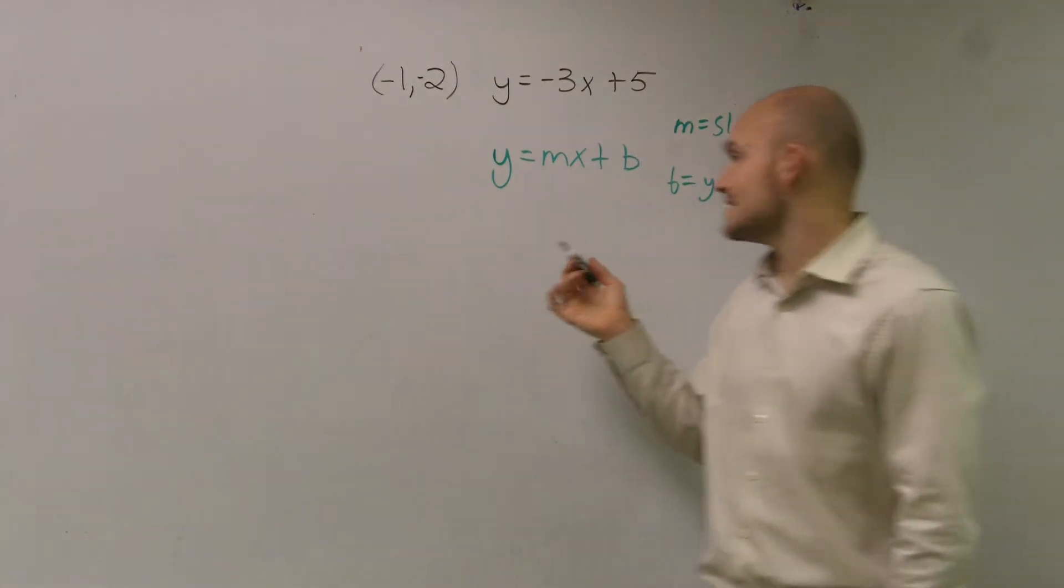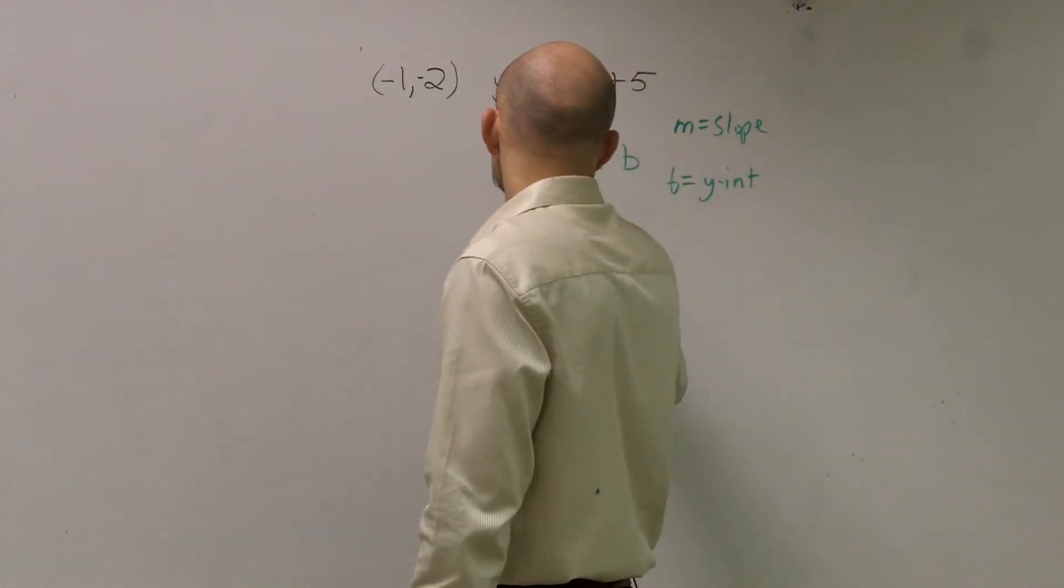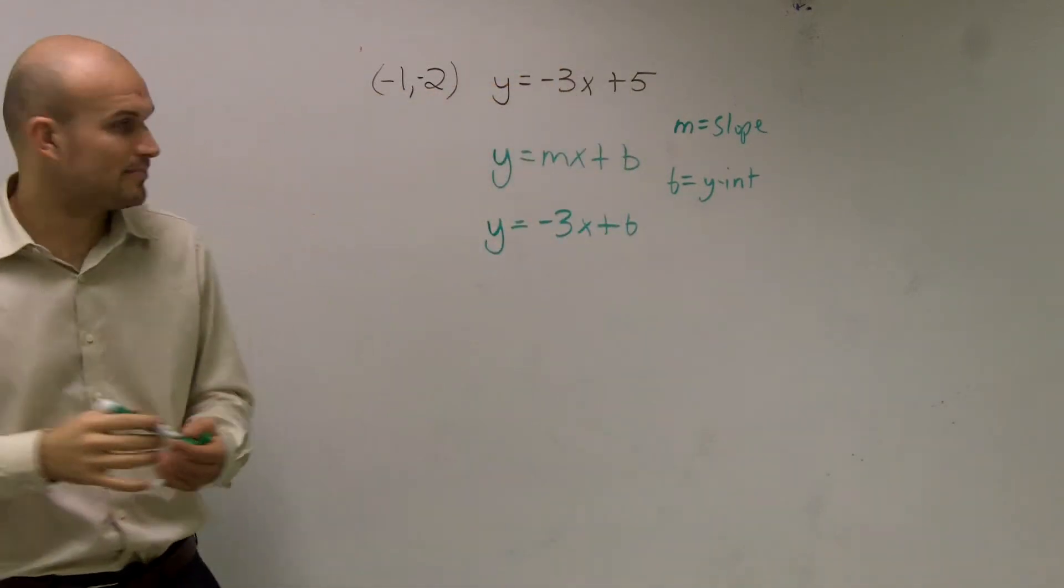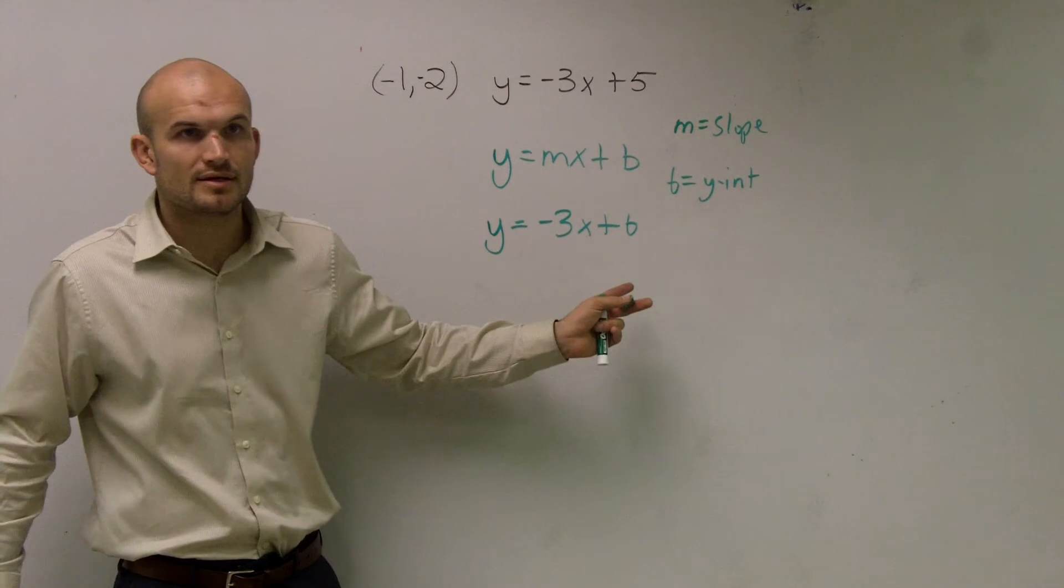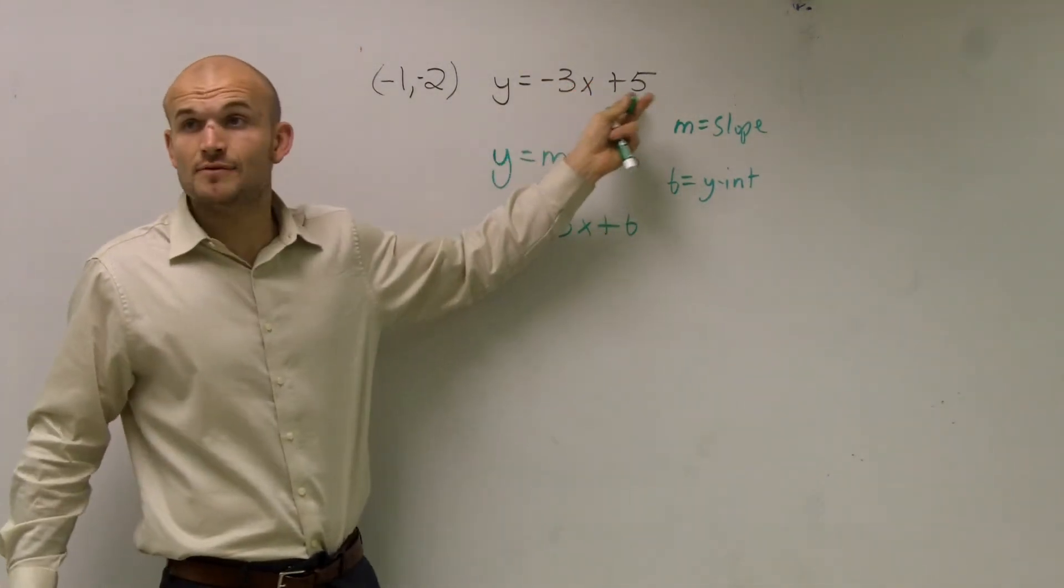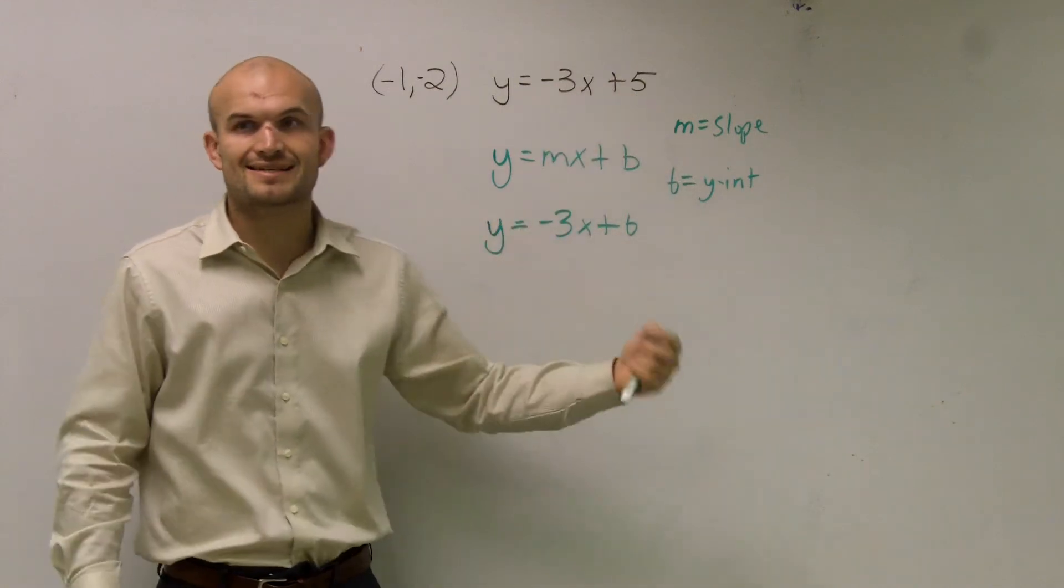So therefore, I can now say that my new equation is y equals negative 3x plus b. Now, almost all students want to put in a 5 in for b. Just because, oh, I put the negative 3 in for m, why don't I put the 5 for b? Well, you could. If you put the 5 in for b, then it'd be the exact same line.